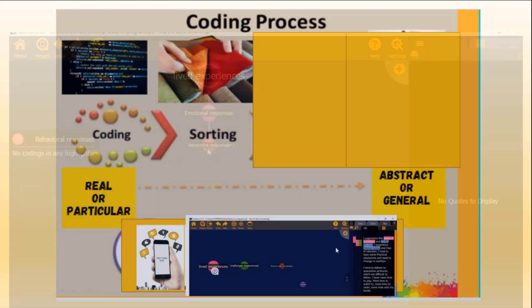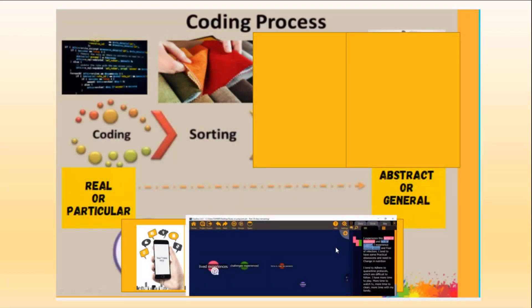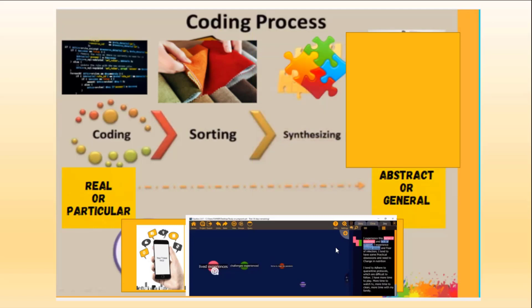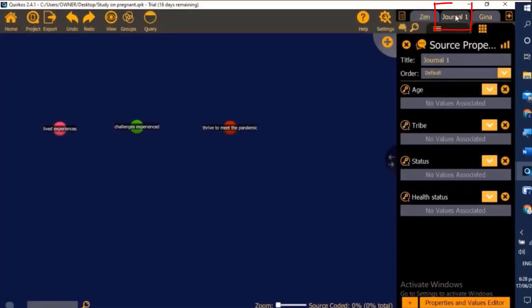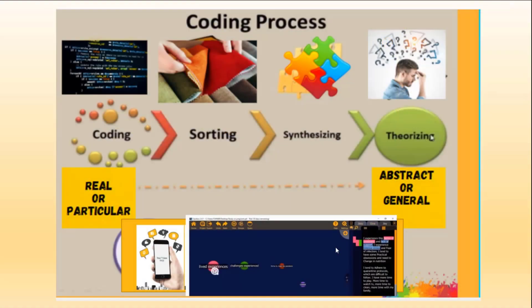Next, we sort the codes and categorize them based on the relationship between code frequencies. After that, we need to synthesize, then move to theoretical coding, which involves the reading of the RRL or related literature. This is the main reason why I include journal publications in the Quirkos software. To deepen your understanding on how to do qualitative data analysis, allow me to illustrate it in this manner.